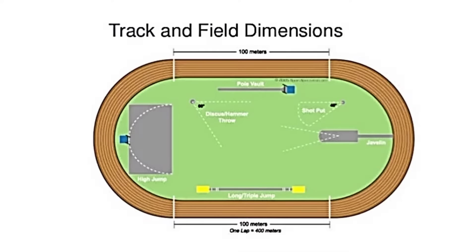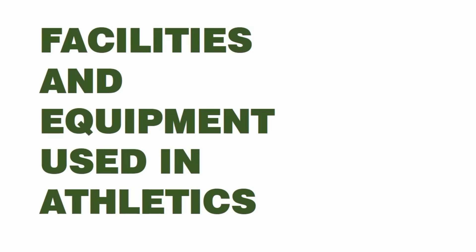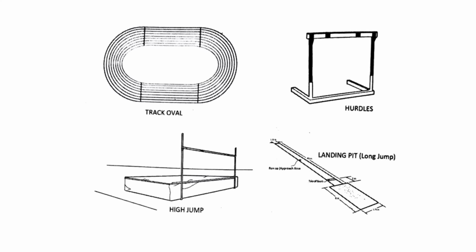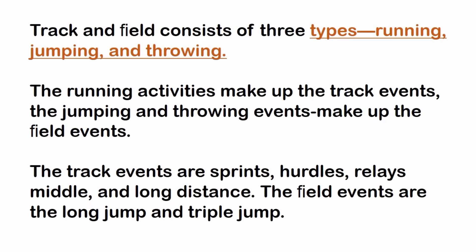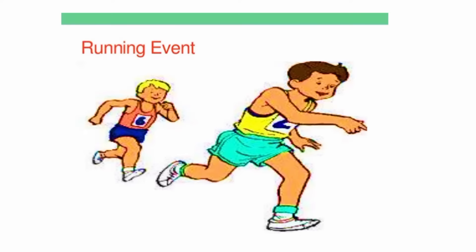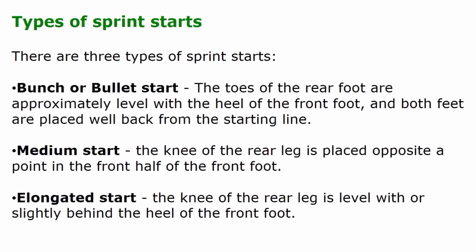This is an overview of track and field dimensions and the facilities and equipment used in athletics. Track and field consists of three types: running, jumping, and throwing. Running activities make up the track events, while jumping and throwing events make up the field events. The track events are sprints, hurdles, relays, and middle and long distance. The field events include the long jump and triple jump.